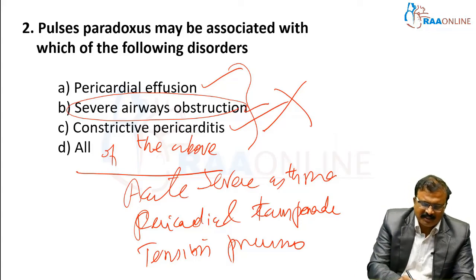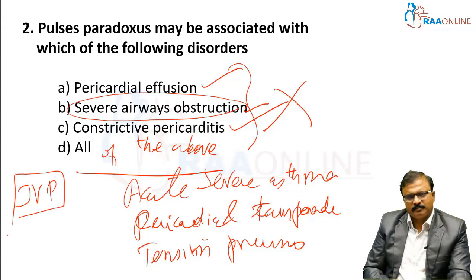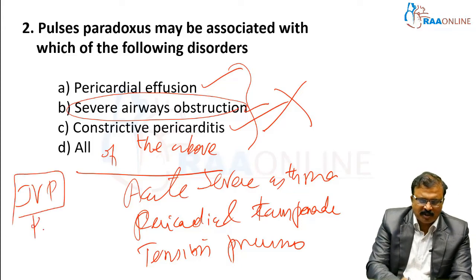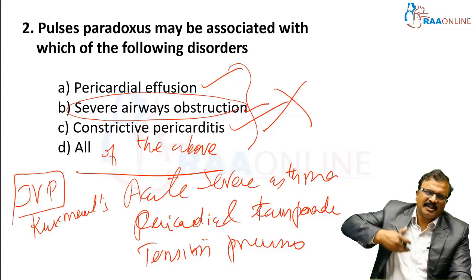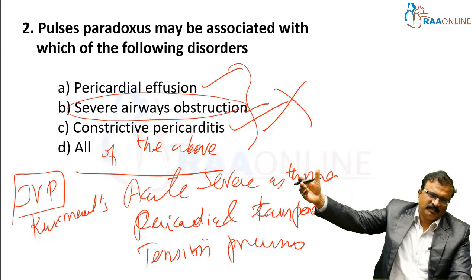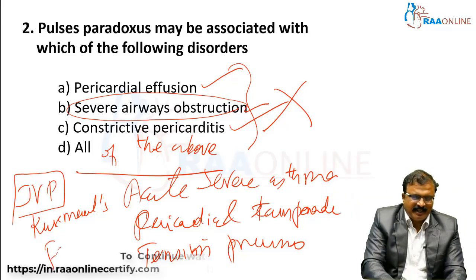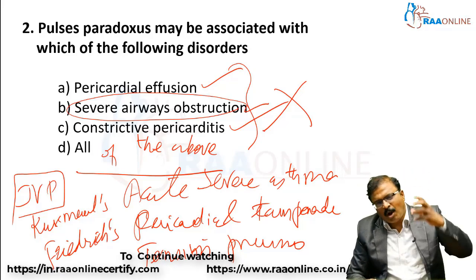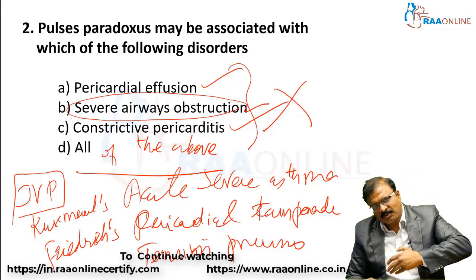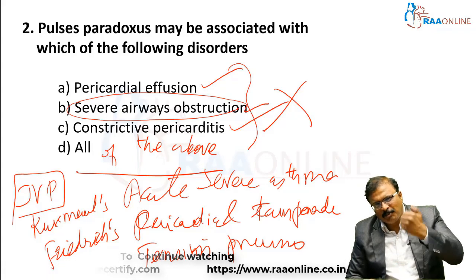Constrictive pericarditis has specific JVP manifestations. One is Kussmaul's sign — during inspiration, there is a paradoxical rise in JVP. The other is Friedreich's sign, which is a deep, prominent Y descent seen in JVP in constrictive pericarditis.